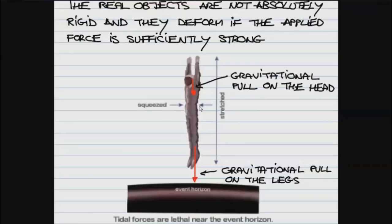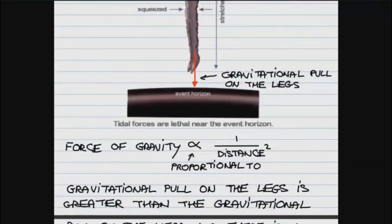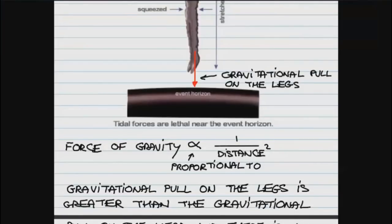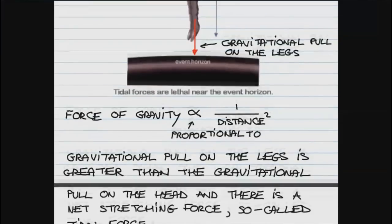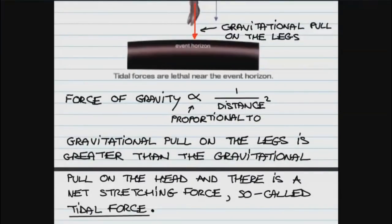The force of gravity is proportional to one over the distance squared. Often in sciences we use the horizontal incomplete eight as a symbol for 'proportional to,' so that we don't need to say 'equal some constant times this.' When you want to focus on how a quantity depends on just a single variable, we often do this. The gravitational pull on the legs is bigger than on the head, and there is a net stretching force.